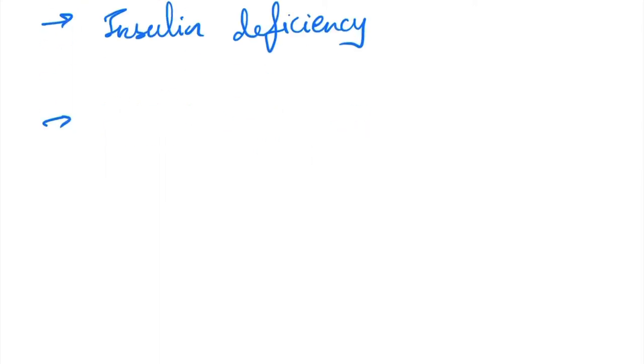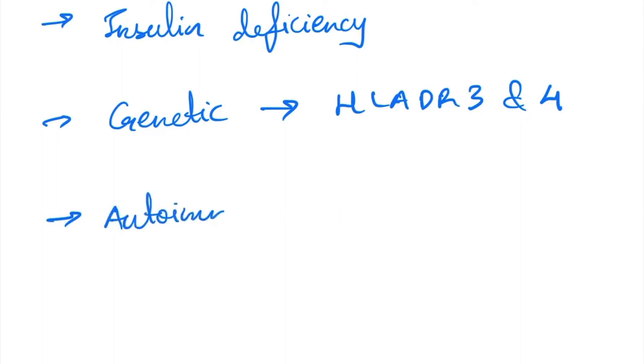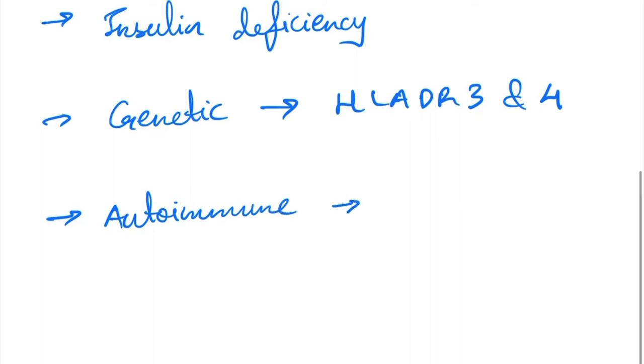It's considered to be a genetic disorder associated with HLA-DR3 and 4. What happens here? We have autoimmune destruction of beta cells from the islet of Langerhans.